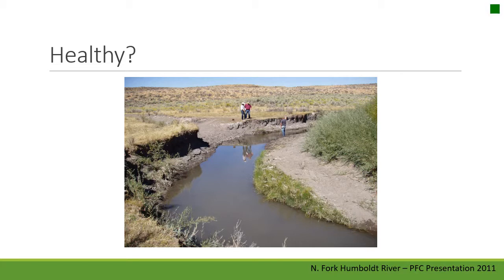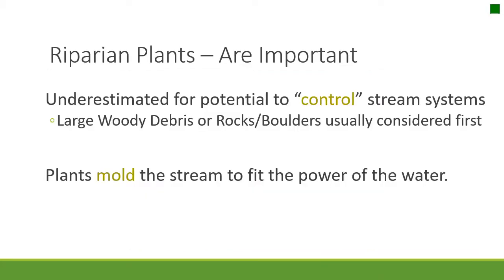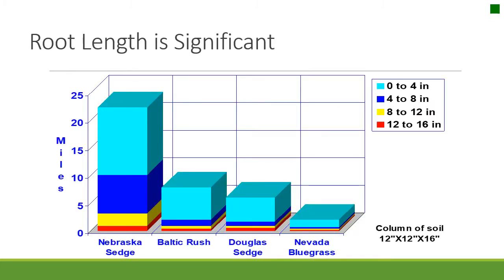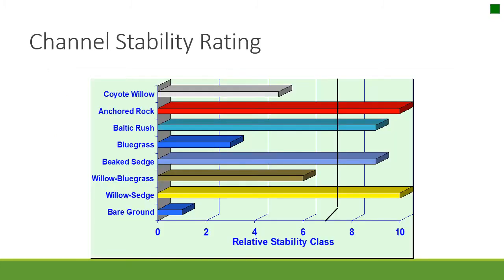This is a good example of what a degraded riparian and stream system looks like. Riparian plants are important for controlling stream systems, even though they're often overlooked — large woody debris and rocks or boulders are usually considered first for the job, but plants have been shown to mold streams and the way they flow. This graph demonstrates the significant amount of root mass and length associated with riparian plants and how they compare to things such as Nevada bluegrass.